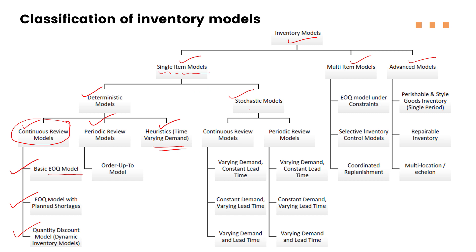If the demand is stochastic and we are using a quantity-based reorder point approach, different combinations arise: if demand is changing but lead time is constant, there is one inventory model; if demand is constant but lead time is varying, there is a different approach; and if both are stochastic, there is yet another way to handle it. Similarly for periodic review. For multi-item models, we can deal with the EOQ model under constraints, depending on what kind of restrictions we have.